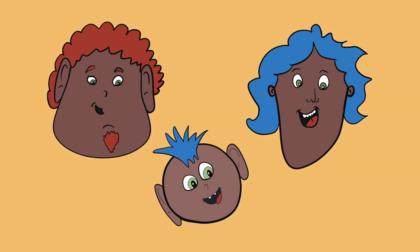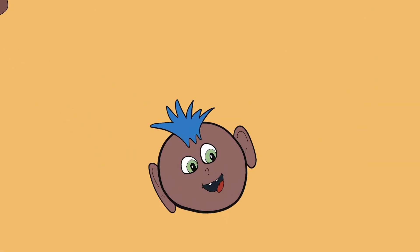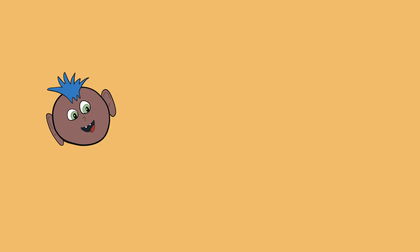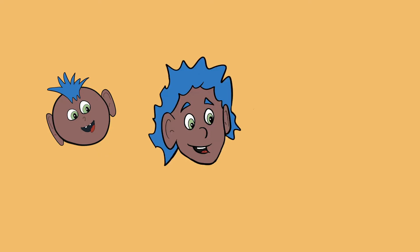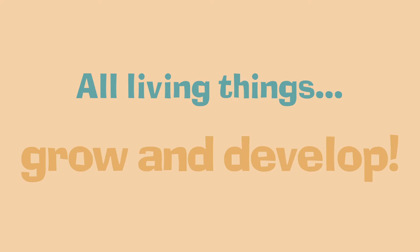Let's use this child as an example once again. She will start off as a small baby, but then she will grow and grow into an adult. And that's the next characteristic of life: all living things grow and develop.